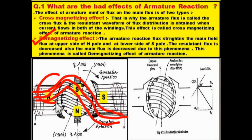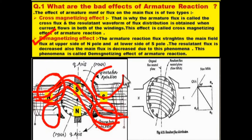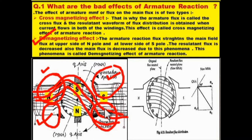The concentration of flux is more at the upper side of the north pole as well as the lower side of the south pole. The armature reaction flux strengthens the main field flux at the upper side of the north pole and the lower side of the south pole. It weakens the flux at the lower side of the north pole as well as the upper side of the south pole. This is called the demagnetizing effect — the resultant flux and main flux are decreased due to this phenomenon.